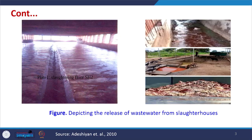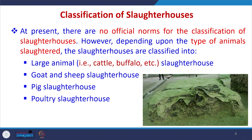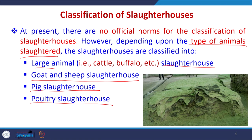In slaughterhouses, various operations are performed and wastewater is released. The wastewater generated is typically reddish or bloodish in nature, and skeletons and bones are also present. Slaughterhouses are classified depending upon the type of animals being slaughtered into large animal slaughterhouses, goat and sheep slaughterhouses, pig slaughterhouses, and poultry slaughterhouses. Mostly, large animal slaughterhouses are of primary concern here.